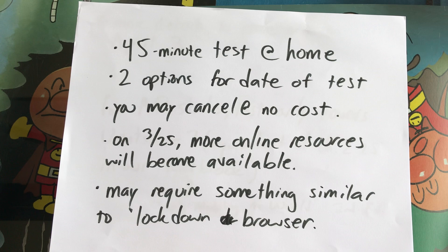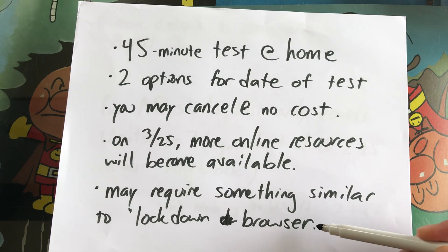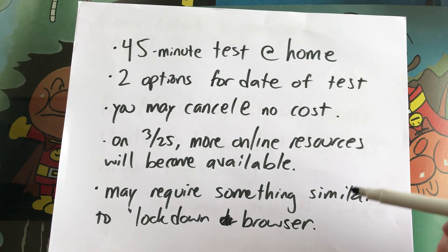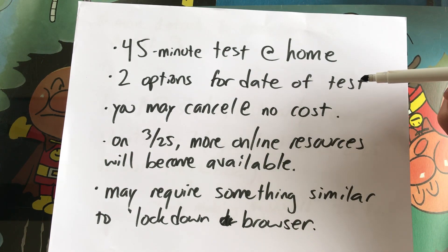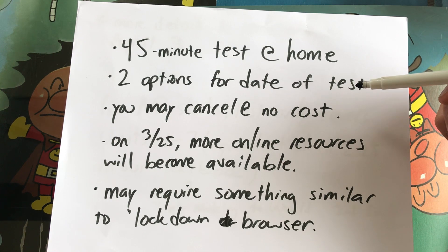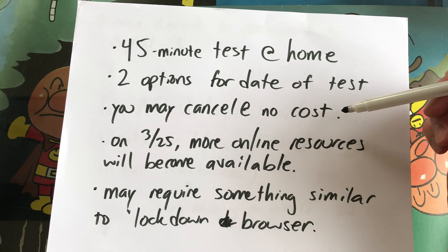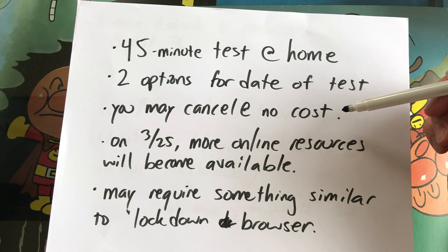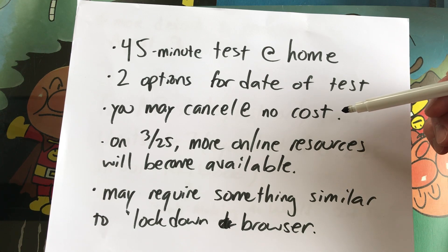It's going to be a 45-minute test at home. Now that it's at home, there's going to be something like a lockdown browser. There are going to be two options for the test date — an earlier date and a later date. Some of you may want to take it earlier so you don't forget the information; others may need more time to study. If you've already signed up and decide you don't want to take the test, you can cancel it and get a refund at no cost.